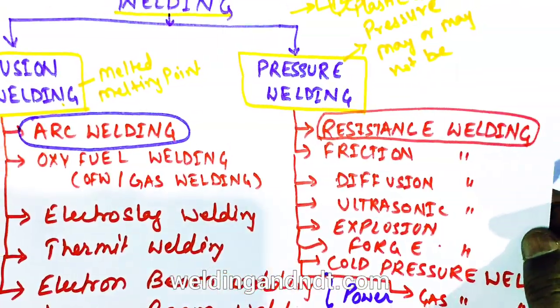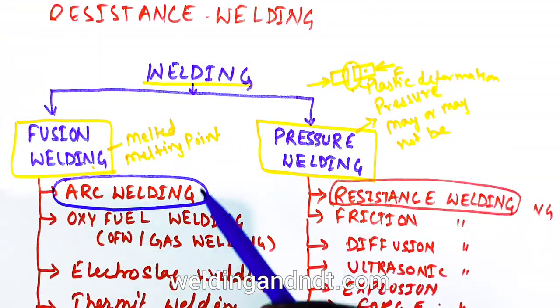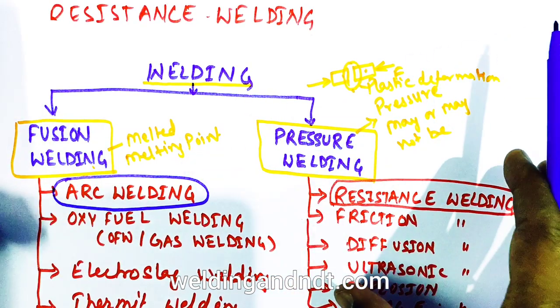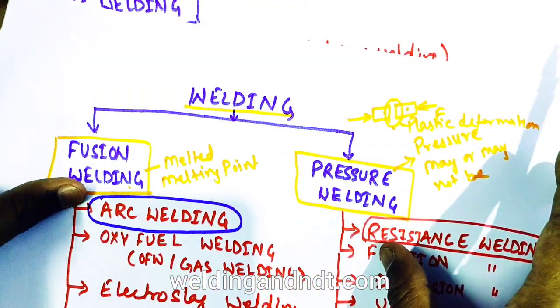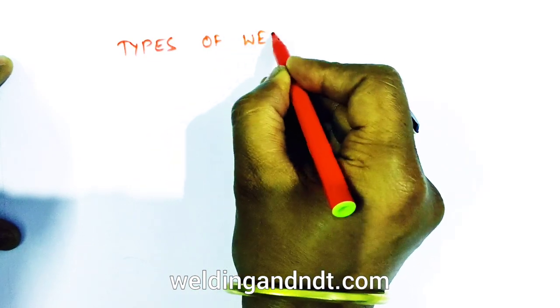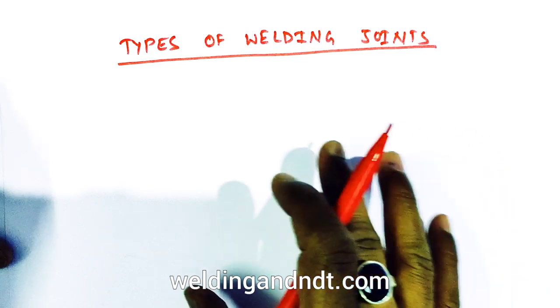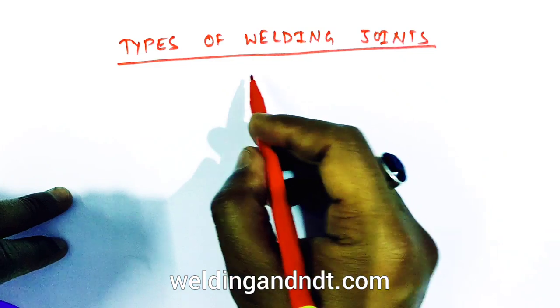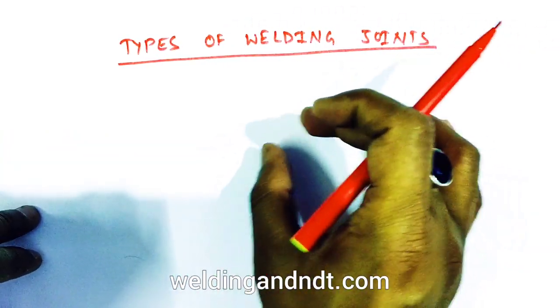Now we have understood the classification of welding processes. Separate videos have been made for processes like shielded metal arc welding, flux cored arc welding, TIG welding, and MIG welding — check the playlist for details. Now we move to the third part of this video: the types of weld joints. A weld joint is the configuration or arrangement of the base metals — the manner in which base materials fit together.